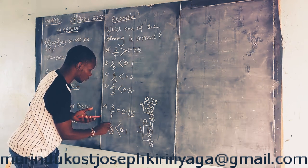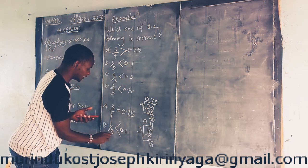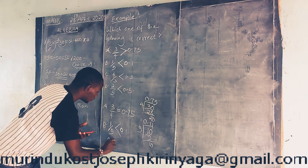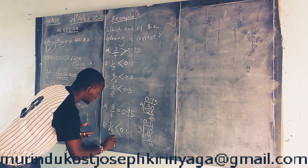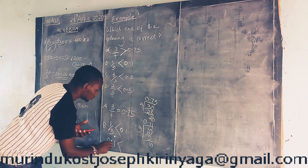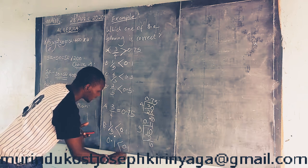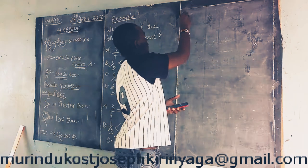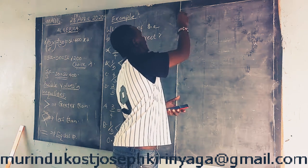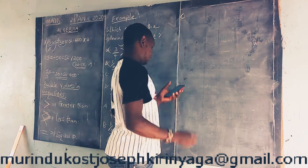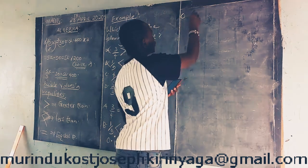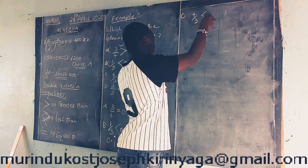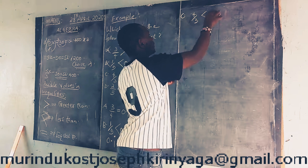1 over 9 is still wrong because 1 over 9 is actually greater, not less — it is recurring, 0.1 recurring. So since it is recurring it is greater than the other, meaning choice B is also wrong. We go to choice C: 4 over 3 is less than 1.3. If you divide, 3 goes into 4 one time with remainder 1.